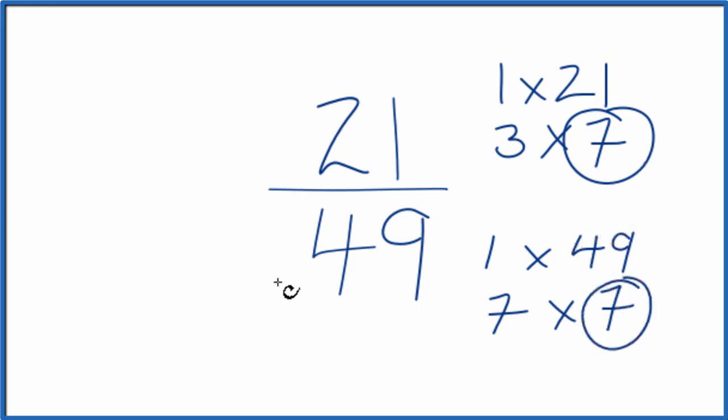So we divide 21 by 7, 49 by 7, and we'll have simplified 21/49. Let's move these over here.